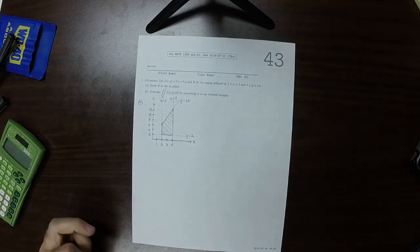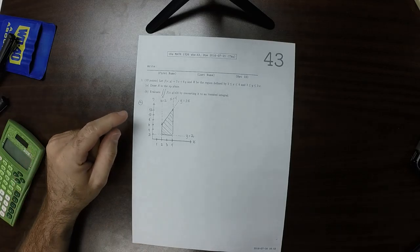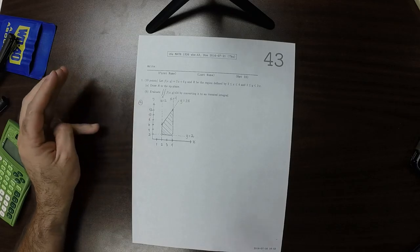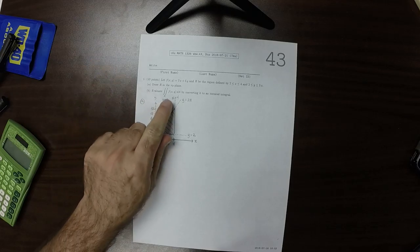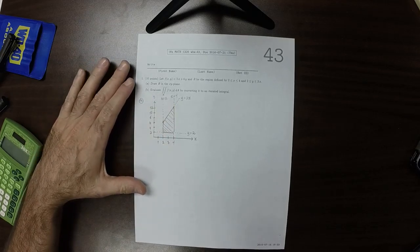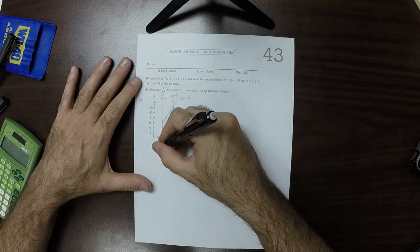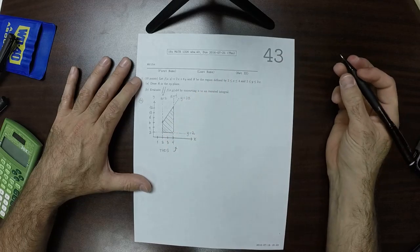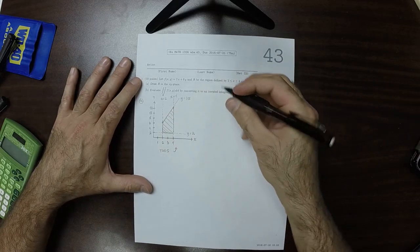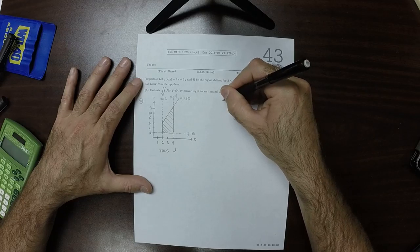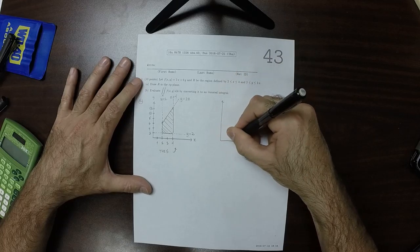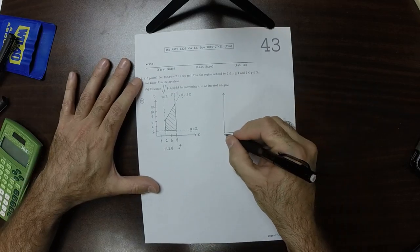Now some students didn't understand the question, and they were trying to draw this picture in the x, y, z space. So trying to draw what this double integral is talking about. So this is what I wanted, this drawing. But just out of interest's sake, I'll show you what it looks like, what the object looks like.